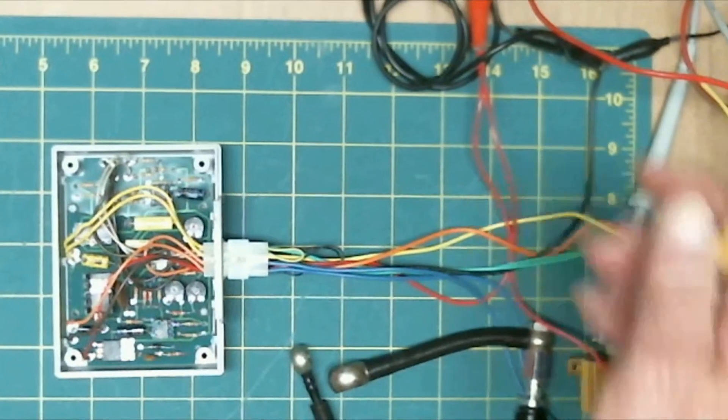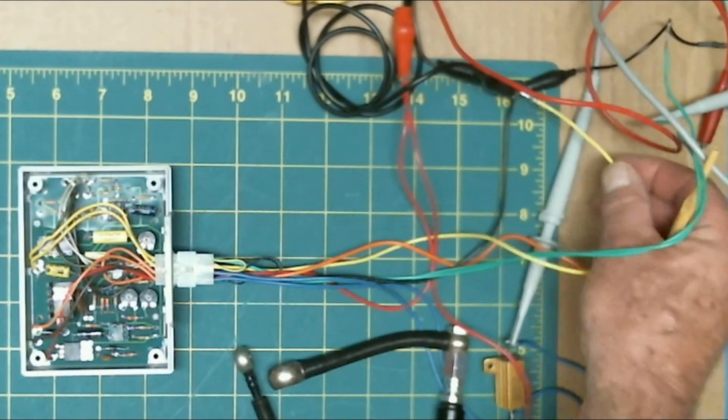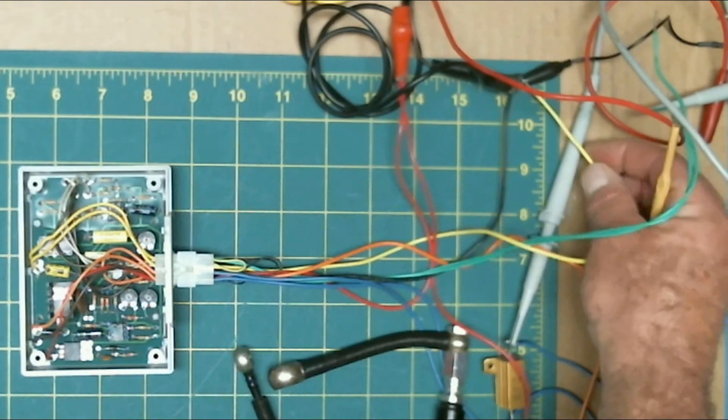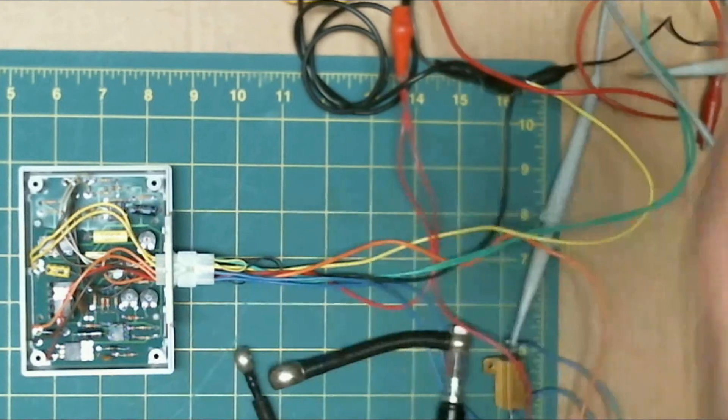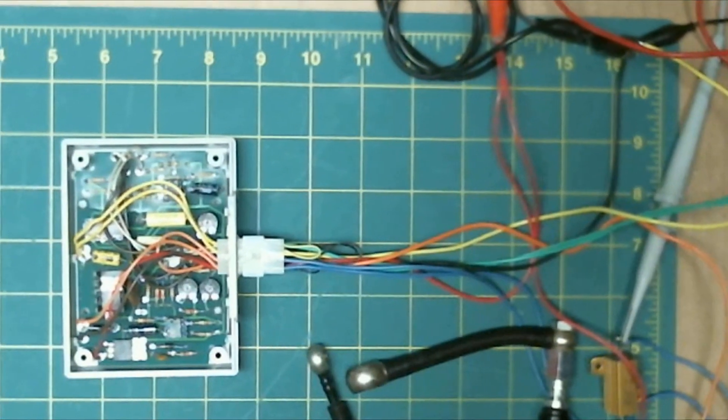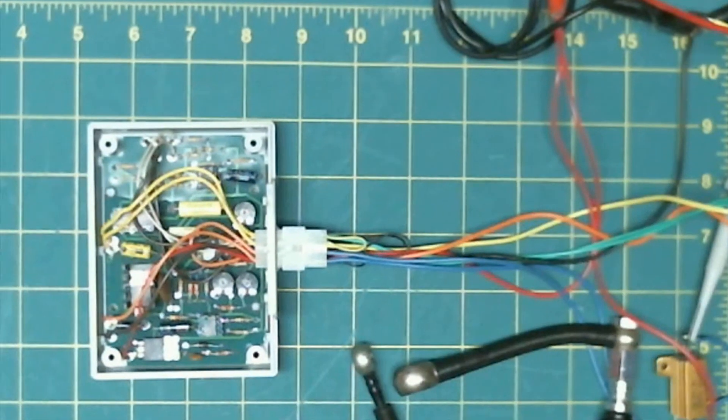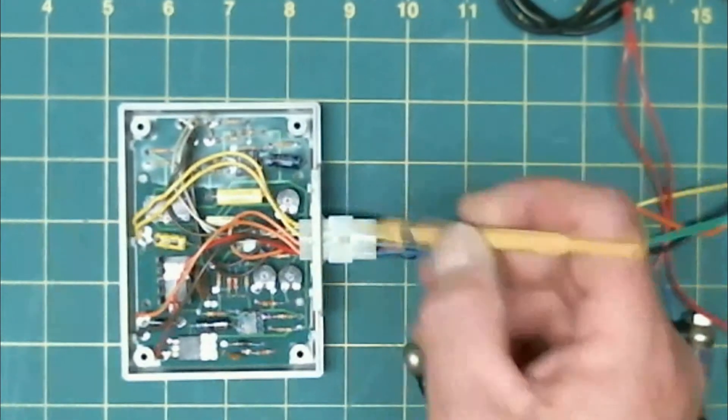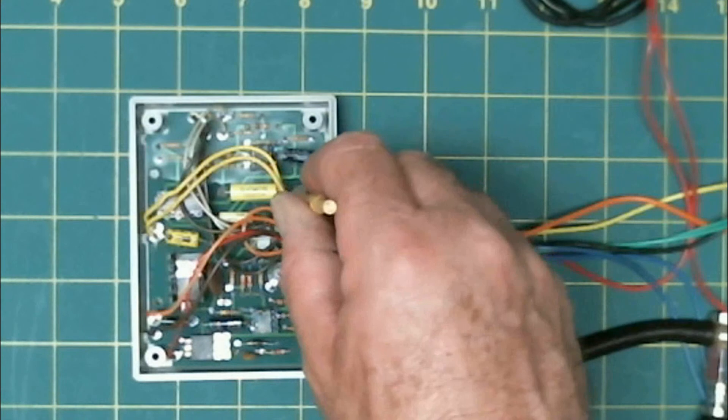The final setting is the cold starting duty cycle, or open loop duty cycle, which is used during cold starting and during full throttle events. That duty cycle should be set for 40%, and we set that at this potentiometer right here.